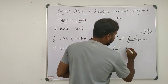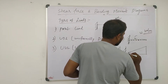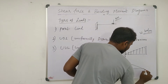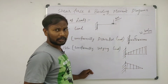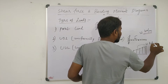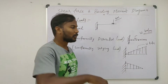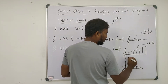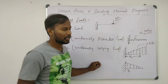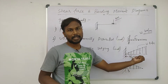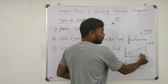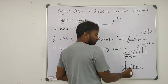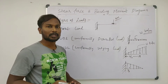Now uniformly varying load. It increases uniformly along the beam — like a triangle. The longest side is at one end, the shortest side at the other. The center of gravity of a UVL: from the longest side it is at one-third, and from the shortest side it is at two-thirds. This is how we can solve problems very easily.